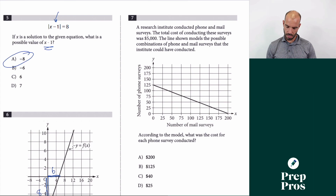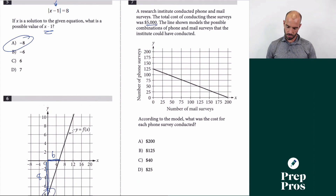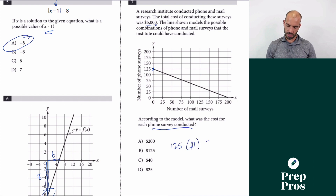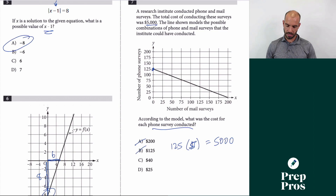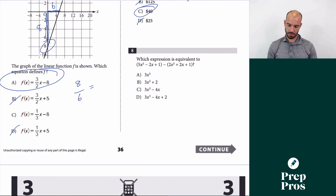Number 7: the total is 5,000 and we're trying to find the number of phones in the survey. We know 125 phones times the price has to equal 5,000. A shortcut: 5,000 divided by 100 is 50, so it has to be less than 50 — 125 phones means 40 makes sense.